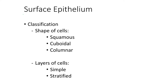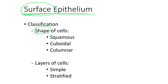Let's focus first on the surface epithelium. As I said before, the surface epithelium is characterized by long sheets of cells, and these long sheets of cells will be covering or lining surfaces. That's why the name of the epithelium is surface epithelium. This surface epithelium is classified according to the shape of the cells and also according to the number of layers of cells.